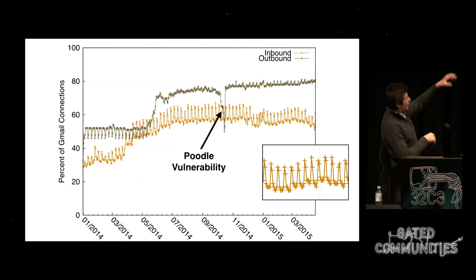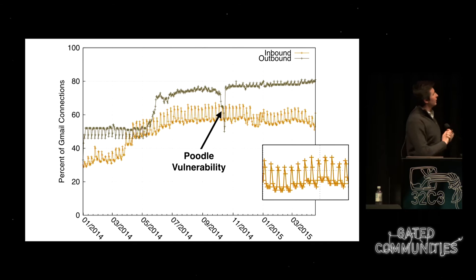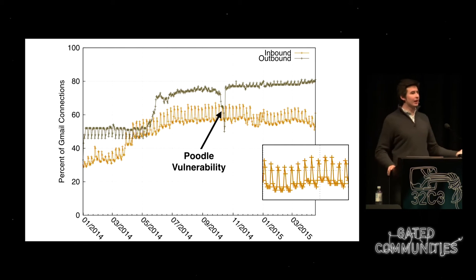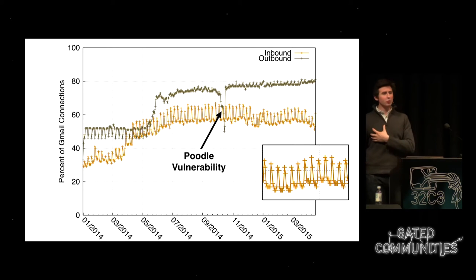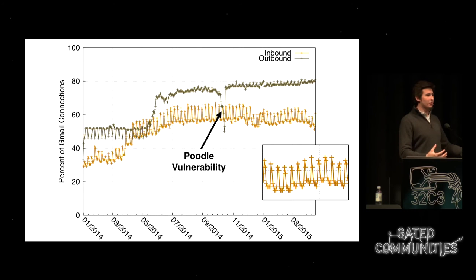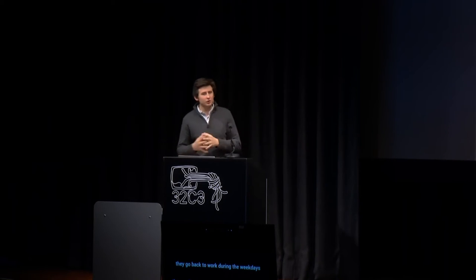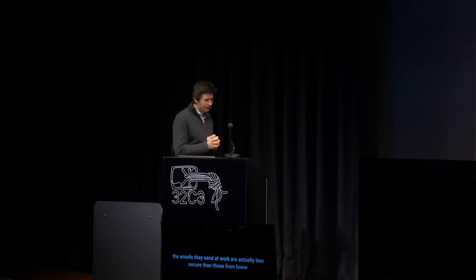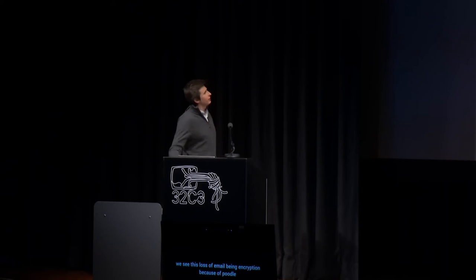Es gibt noch eine spannende Kurve: es geht da hoch und runter – das sind Wochentage im Vergleich zu Wochenenden. Bei den E-Mails die bei Gmail ankommen, sind etwa 10 Prozent mehr verschlüsselte E-Mails an Wochenenden. Wir vermuten, am Wochenende benutzen Leute ihre privaten Accounts, während unter der Woche E-Mails aus dem Büro weniger oft verschlüsselt sind. Man sieht auch einen großen Sprung von minus 20 Prozent als die POODLE-Vulnerability veröffentlicht wurde, weil Leute panik hatten und einfach TLS abgestellt hatten.